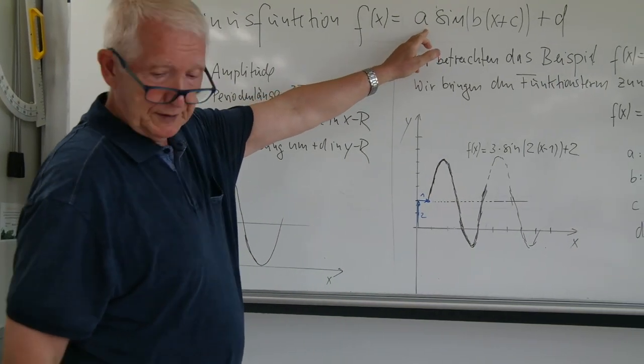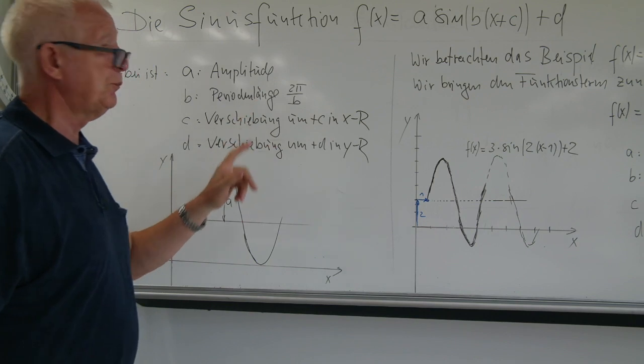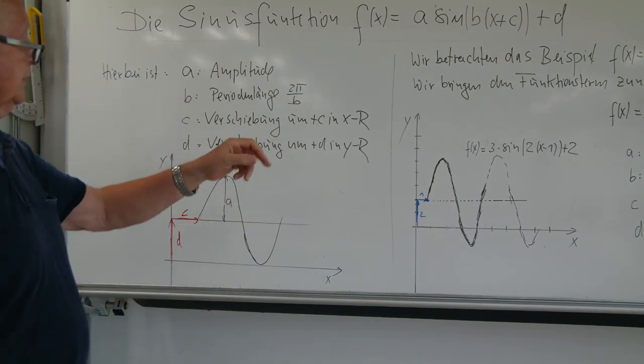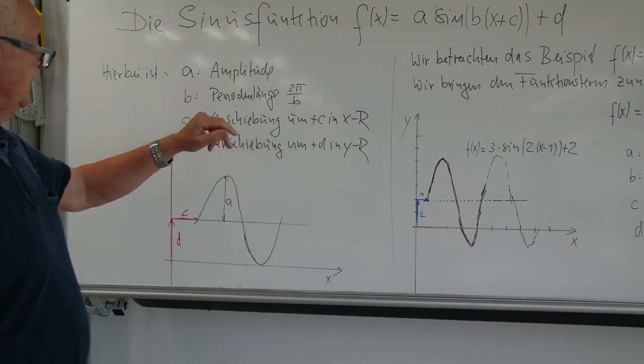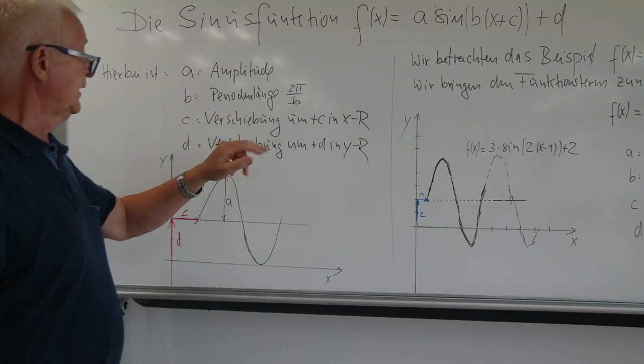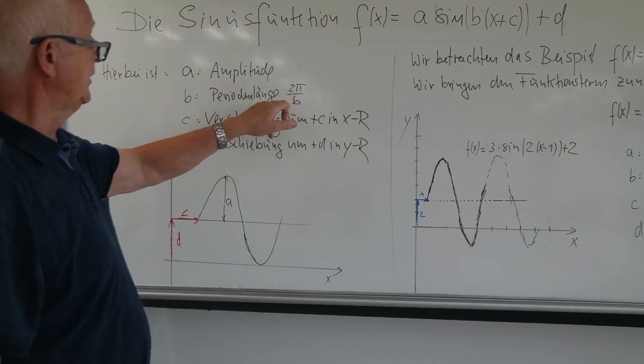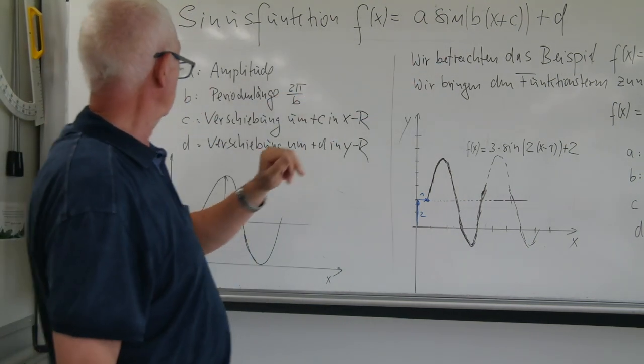Das a ist die Amplitude, also der höchste Ausschlag der Funktion. Das b ist die Periodenlänge und diese Periodenlänge, die berechnet sich durch 2π durch den Wert b selbst für die Funktion.